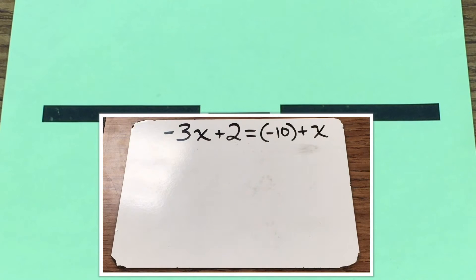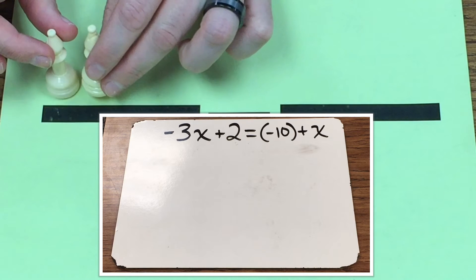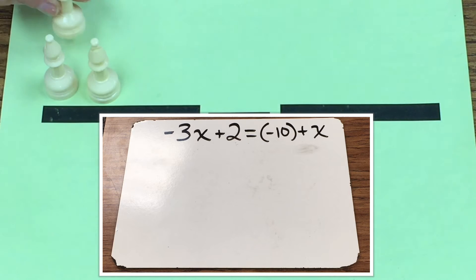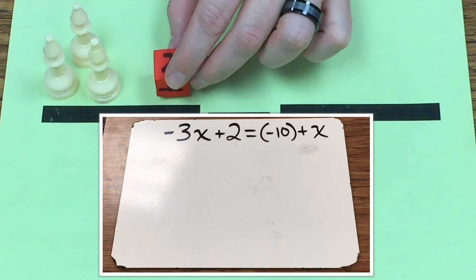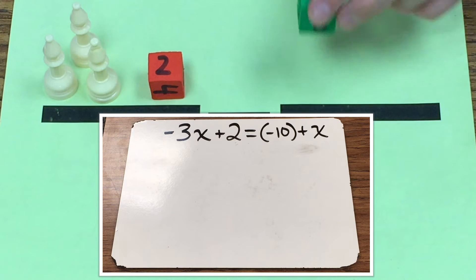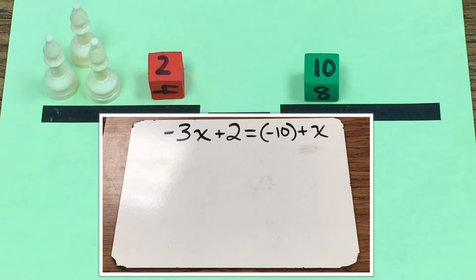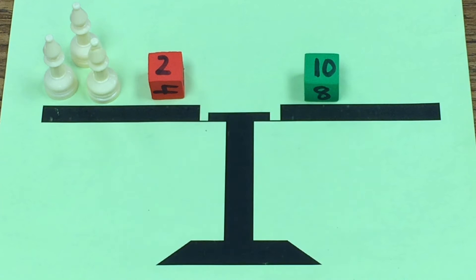So I'm first going to set the problem up. I have the opposite of 3x, so that means I have three white pawns on this side of the scale, and then plus a positive 2, represented by a red 2. On the other side of the scale I have a negative 10, and greens are going to be negative, and then I have plus x.